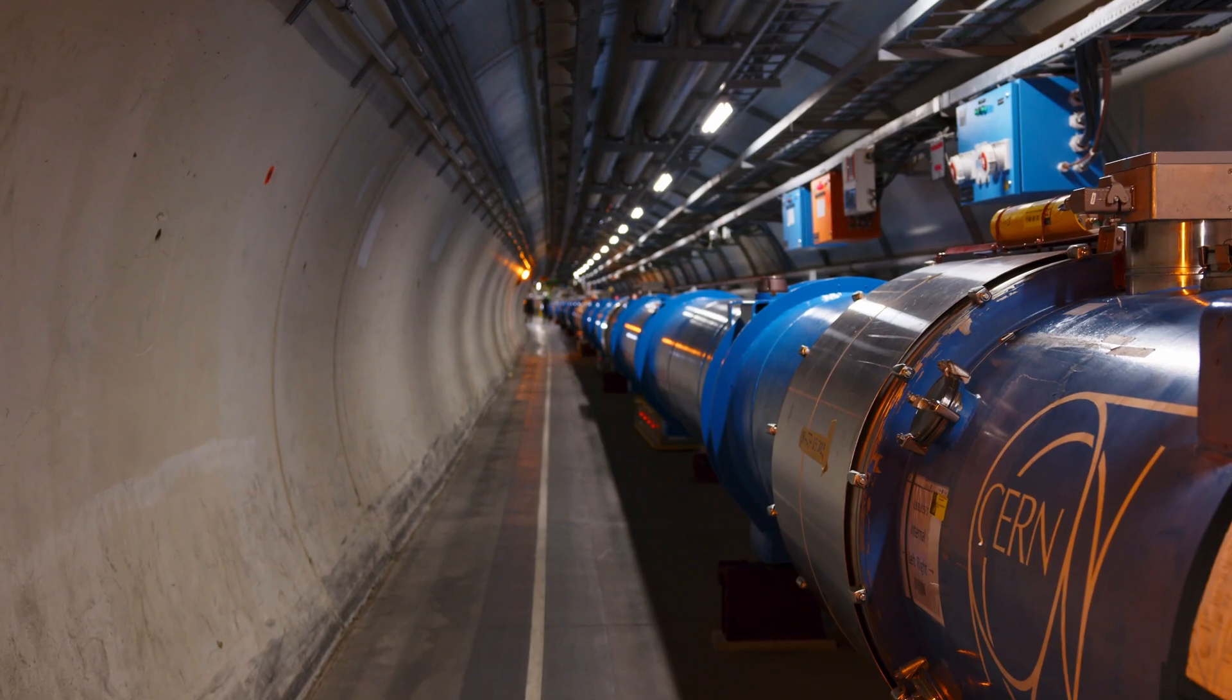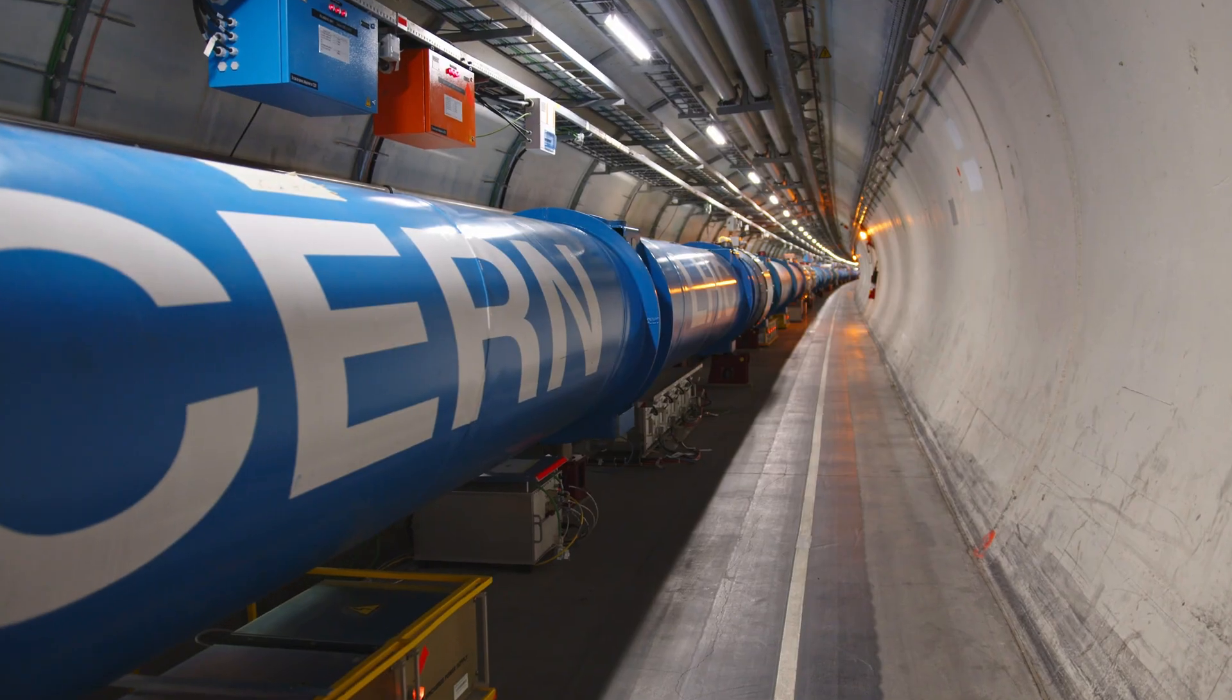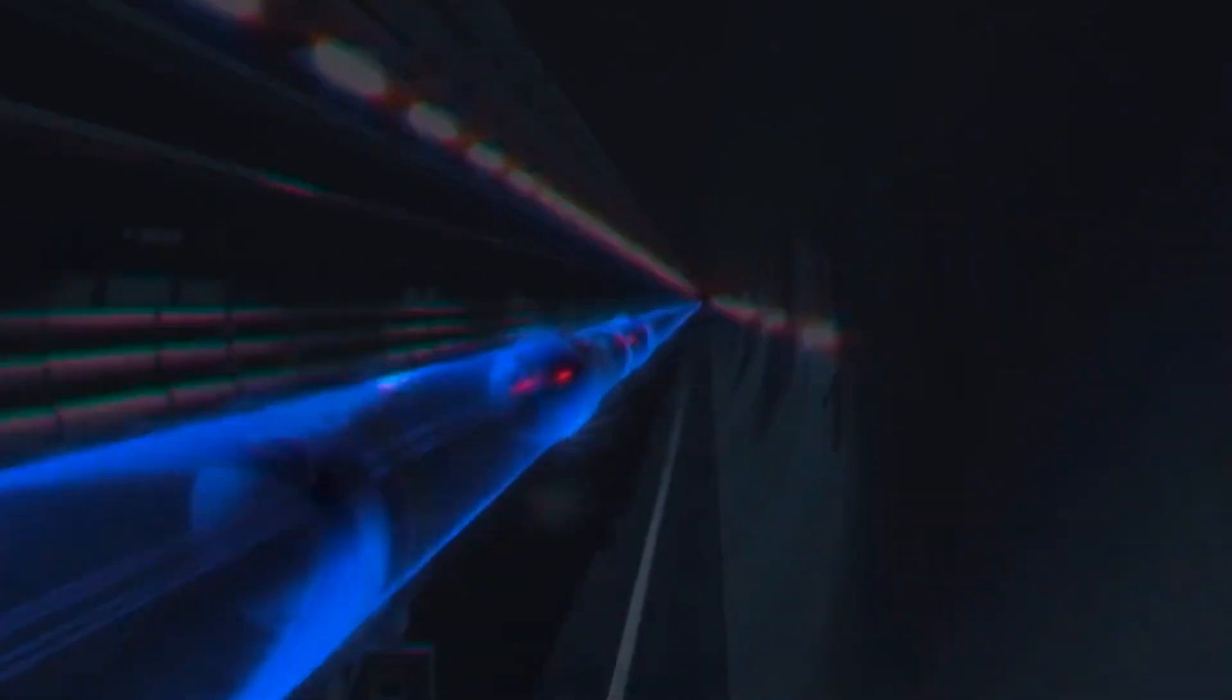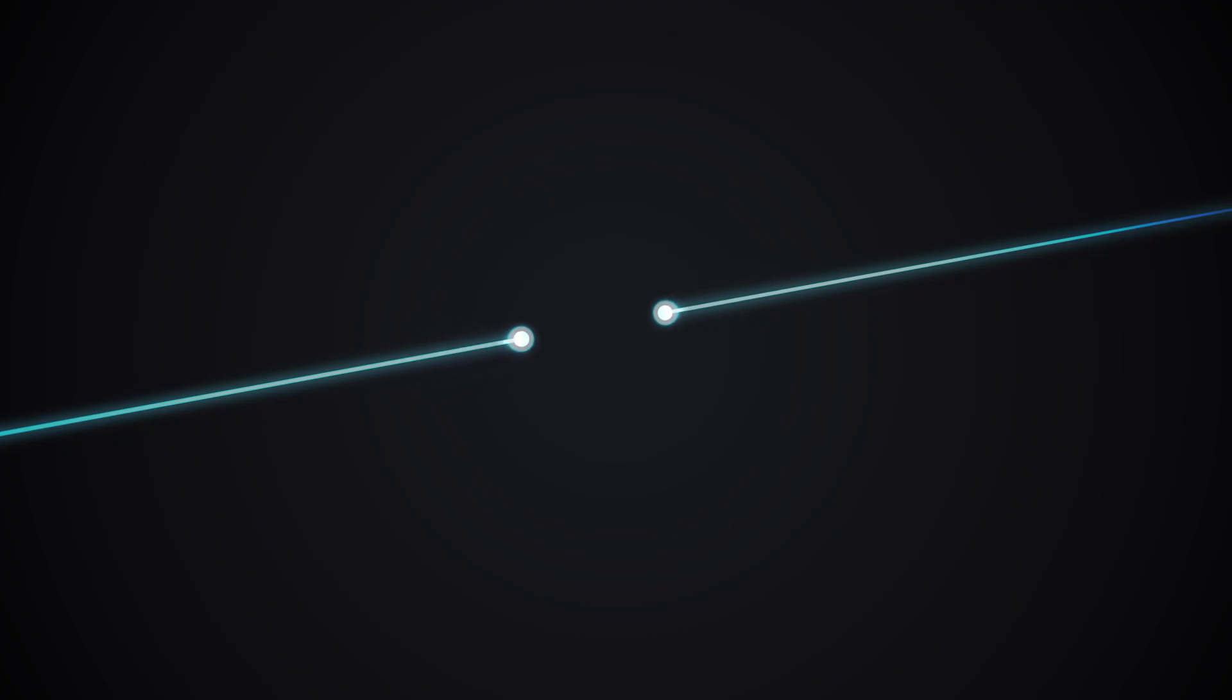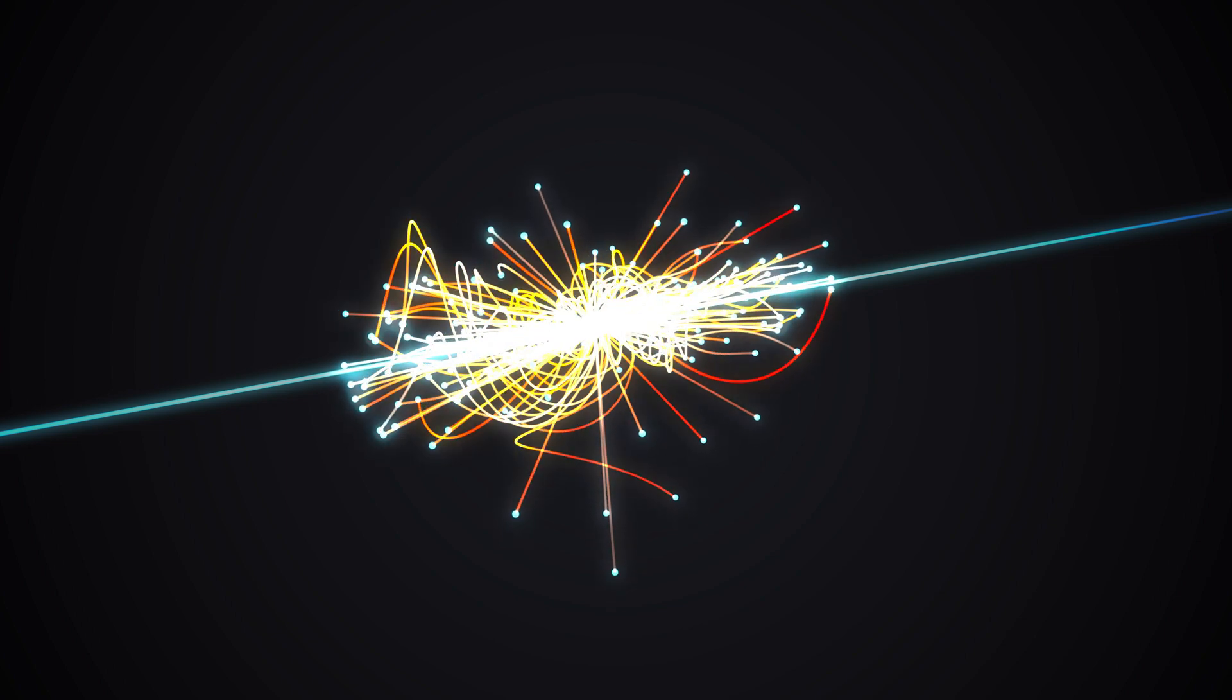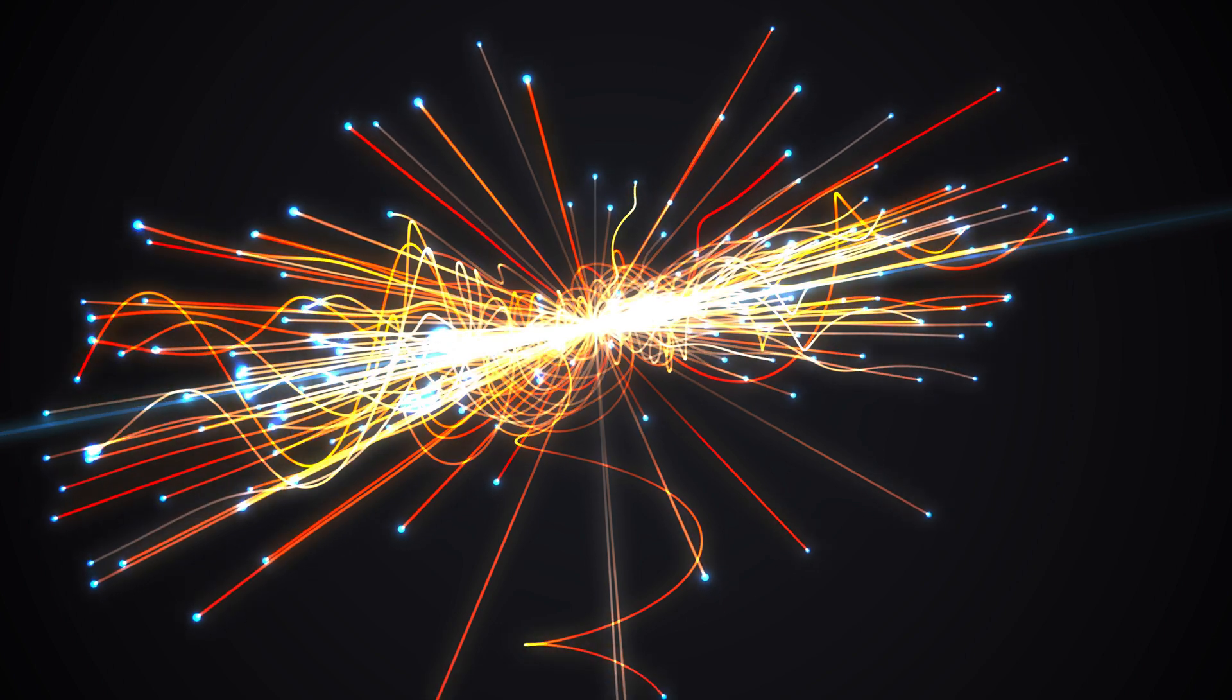Then there's what the particle collider experiments do. So this is like the large hadron collider at CERN. It takes protons, which are particles we know and love, accelerates them up to almost the speed of light, smashes them into each other, taking the energy of these protons and trying to convert it into new mass. And they are looking for some new particle to come out of this collision that has properties that are consistent with what we know about dark matter.